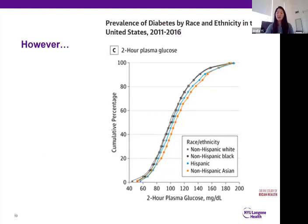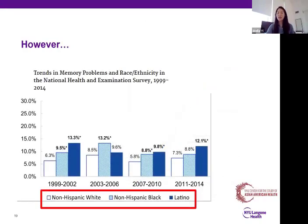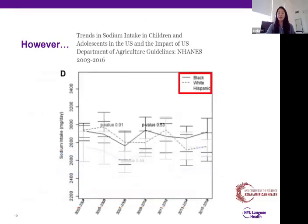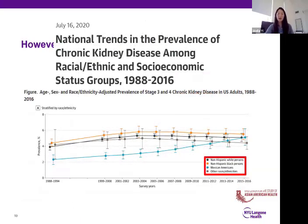While we are seeing many publications that now include the Asian American Pacific Islander data, we are also observing that newer analyses that have this new data are actually still not including Asian Americans routinely. Part of these patterns are somewhat attributable to the fact that these analyses are trend analyses that have baseline values from 15 to 20 years ago. But this also points to a larger limitation of the NHANES data: despite having been added, it will be several years or even several survey waves before meaningful trends can be presented for Asian Americans using NHANES, let alone any kind of longitudinal analyses with linked data sets.